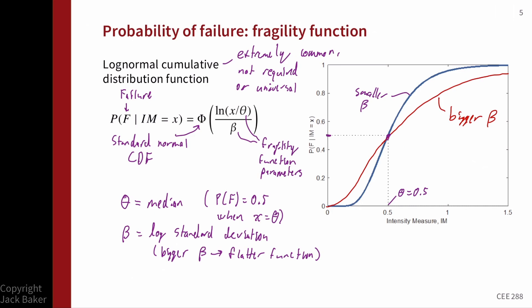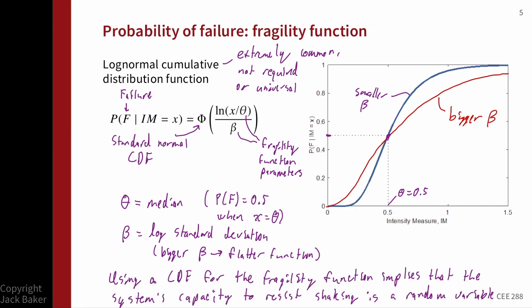The physical interpretation of this log-normal CDF form is as follows. We can think of the system as having some capacity to resist shaking, but we don't know exactly how much — we don't know the shaking level at which it would fail. So the intensity measure that would cause failure has a log-normal distribution with parameters theta and beta. At a given shaking level, the probability of failure is the probability that the system's capacity is less than the shaking experienced — a log-normal CDF calculation. The log-normal CDF is also convenient because probabilities go from zero to one as the intensity measure increases.